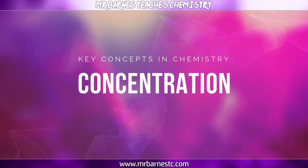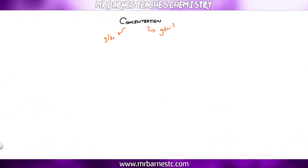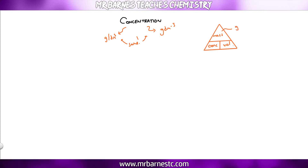The next calculation is concentration in grams per decimetre cubed — whether you see it as g dm⁻³ or g/dm³, it's the same thing. Use the triangle: mass (g) ÷ volume (dm³) = concentration (g/dm³). Sometimes the question gives volume in cm³, so you must convert to dm³ first.